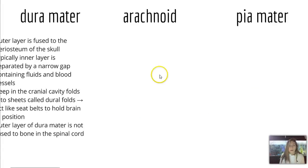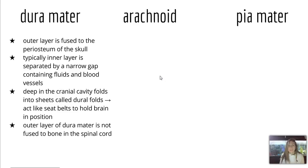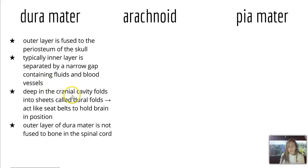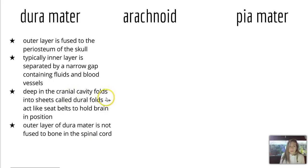Some important notes about each layer. The dura mater is the outer layer; it is fused to the periosteum of the skull. Typically, the inner layer is separated by a narrow gap containing fluids and blood vessels. Deep in the cranial cavity, it folds into sheets called dural folds and acts like seatbelts to hold the brain in position. The outer layer is not fused to bone in the spinal cord like it is in the brain.